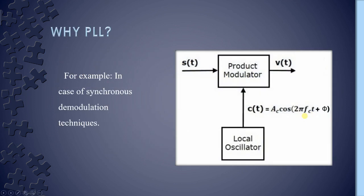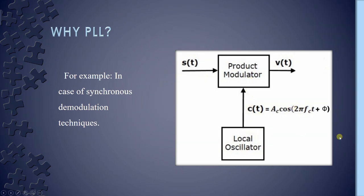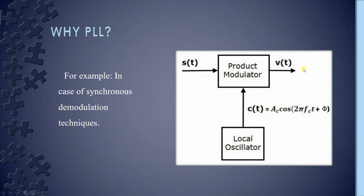So why do we use PLL? For example, in the case of synchronous demodulation techniques, the local oscillator provides a very high frequency to the product modulator, denoted by cos(2πfct). However, when the local oscillator provides this very high frequency, it also introduces a phase error, denoted by phi. Due to this phase error, in the output section we get noise and distortion. To minimize this phase error, we use a phase locked loop.